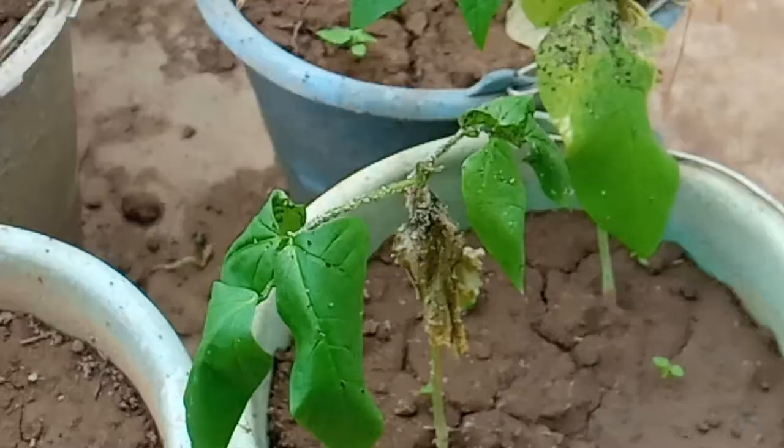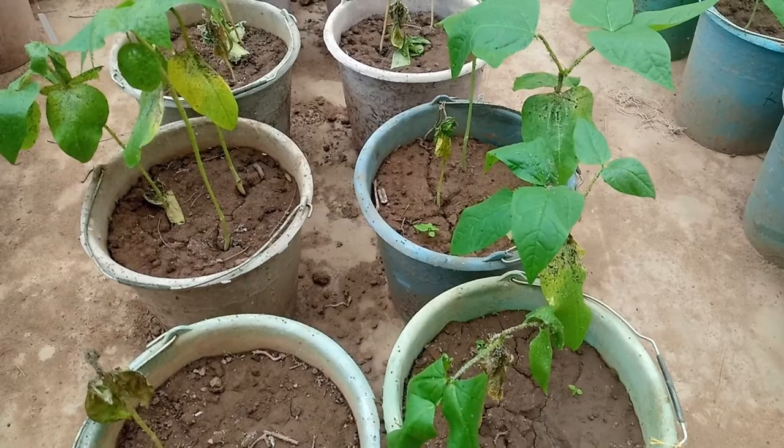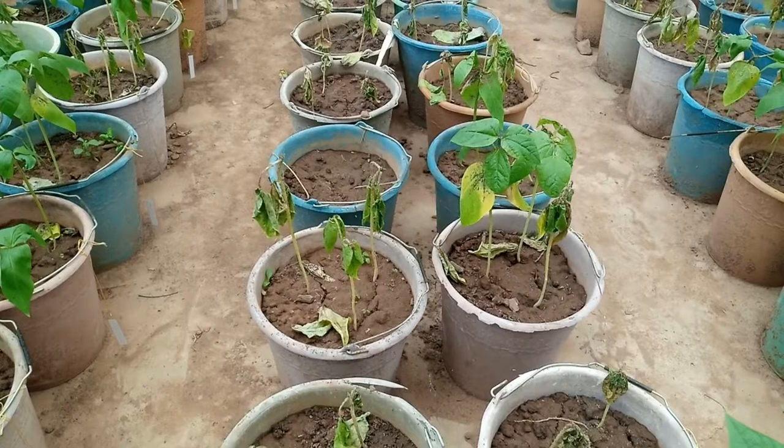Susceptible plants show signs of severe wilting, yellowing of leaves, and in some cases even seedling death.